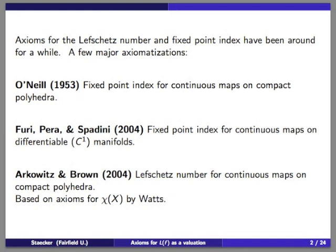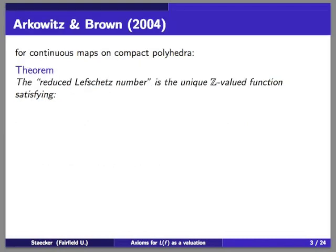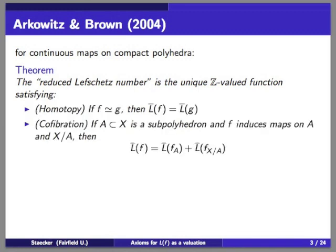Arkowitz and Brown's axioms were based on axioms for the Euler characteristic done in the 1960s by Watts. This is a good starting point because the Euler characteristic equals the Lefschetz number of the identity map. In general, if you see a theorem about the Euler characteristic, you can try to do the same thing for the Lefschetz number. The reduced Lefschetz number — equal to the Lefschetz number minus one — is the invariant they proved was unique. It is more convenient to write the axioms in terms of this. They showed it is the unique integer-valued function satisfying these properties: homotopy invariance and what they call the co-fibration axiom, a sort of additivity property.